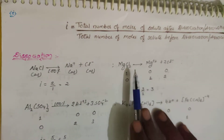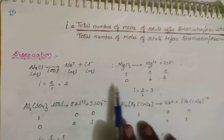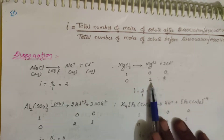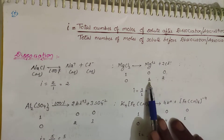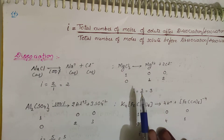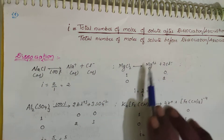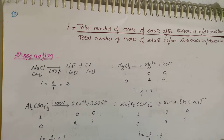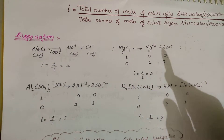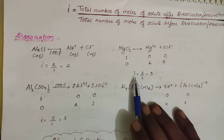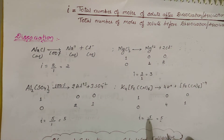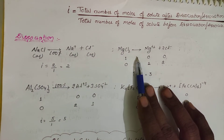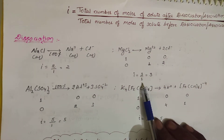For MgCl₂: initially 1 mole. After 100% dissociation: 1 mole Mg²⁺ and 2 moles Cl⁻, total 3 moles. So i = 3/1 = 3. This means the colligative property observed is three times the calculated value when MgCl₂ is completely dissociated.